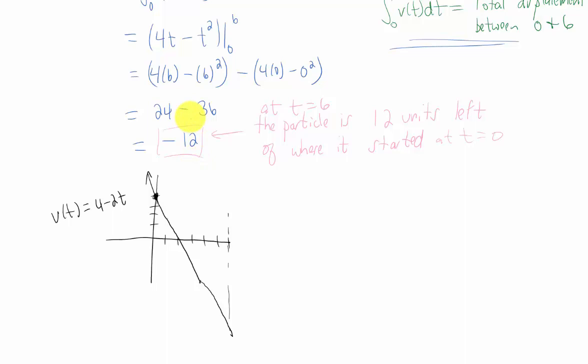what we found in the first part of this problem was the area under this curve minus the area under this part of the curve. This area turned out to be negative 12, because this area under the curve was 12 units bigger than the area above the curve. But the total distance traveled represents this area here, plus this area right here. In other words, the total distance traveled is the integral from 0 to 6 of the absolute value of the velocity function.